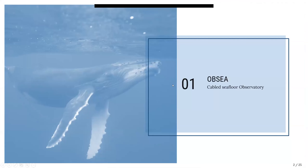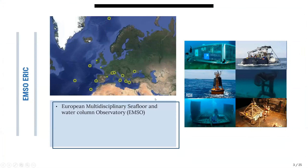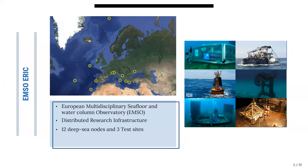So first, what is OPSI and what is EMSO? EMSO stands for European Multidisciplinary Seafloor and Water Column Observatory. It's a network of different facilities scattered on the European seas, mainly focused on environmental monitoring, as a distributed research infrastructure with 12 deep-sea nodes and also three test sites located in shallow waters.